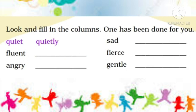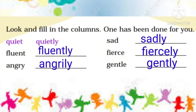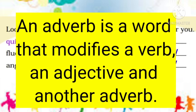Now look and fill in the columns. One has been done for you. Quiet — quietly, fluent — fluently, angry — angrily, sad — sadly, fierce — fiercely, gentle — gently. Kids, words ending with '-ly' are called adverbs. An adverb is a word that modifies a verb, an adjective, or another adverb. Lots of adverbs end with '-ly,' like quickly, extremely, happily, etc.